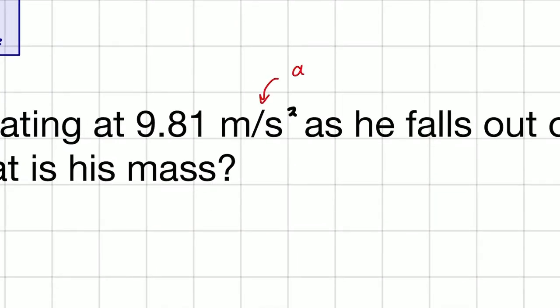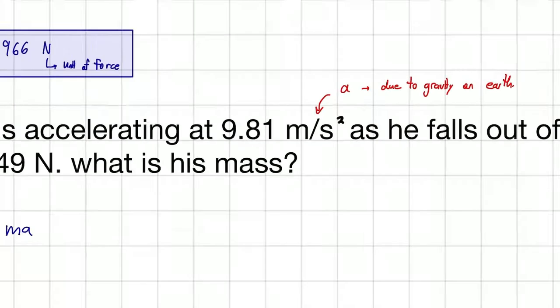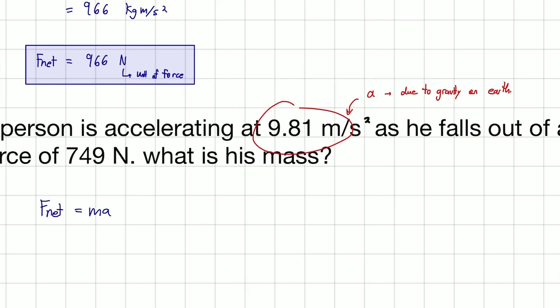One thing that's important to note here is that 9.81 meters per second squared, that's the acceleration due to gravity on Earth. If you're going to be on a different planet that's not Earth, you'll have a different acceleration due to gravity. But on Earth, our acceleration is 9.81 meters per second squared towards the ground, or towards the center of the Earth.